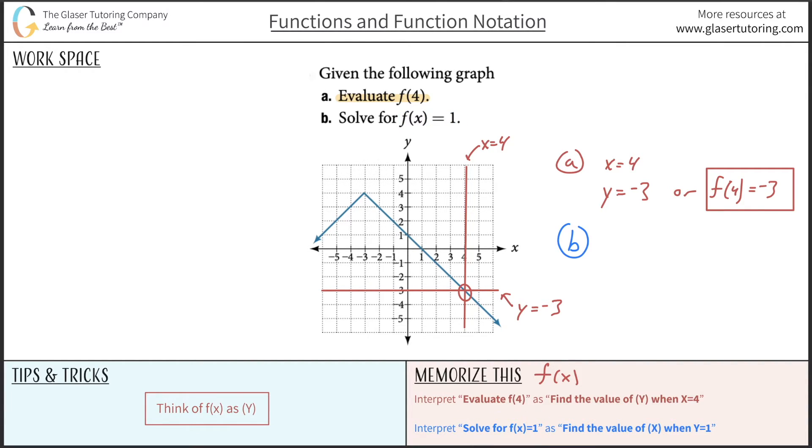So that's how I want you to interpret. If you look down at the bottom, solve for f of x is equal to 1. Reinterpret that as find the value of x when y is 1. So now we know y to be equal to 1. So where is y equal to 1? Well, here it is. This is y equals 1. So I'm going to draw a nice little horizontal line.